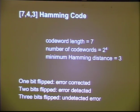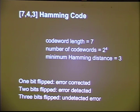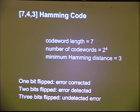That Hamming distance gives us these properties: if one bit is flipped, we can correct the error when we receive this code. It's only one bit away from one valid code word. If two bits are flipped, we can see that what we received is not a valid code word — but if we try to correct it, we may end up with the wrong one. If three bits are flipped, we might actually receive a valid code word that was not the intended data — a completely undetected error.